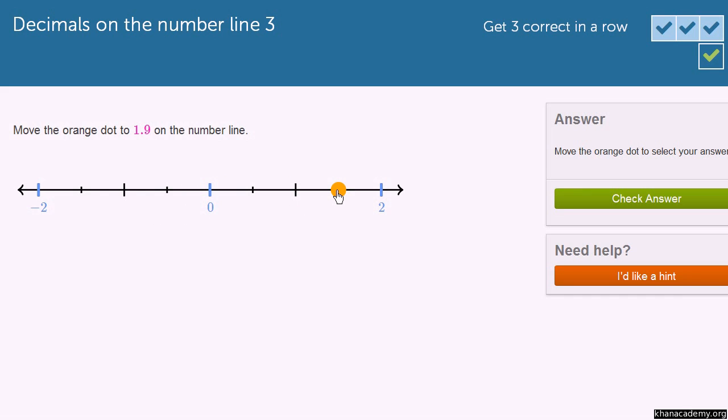And 1.9 is only going to be a tenth less than 2. So it's going to be, let's see, that's 2. So a tenth less than that. And I'm assuming that it's locking us to the tenths. And it looks like it is. So that looks pretty close to 1.9.